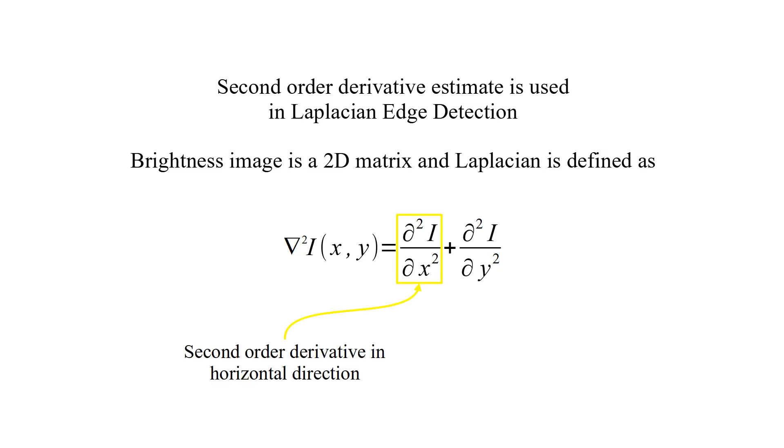Second order derivative estimate is used in Laplacian edge detection. Brightness image is a 2D matrix and Laplacian is defined as the summation of second order horizontal and vertical derivatives. This is second order derivative in horizontal direction. And the other one is second order derivative in vertical direction.